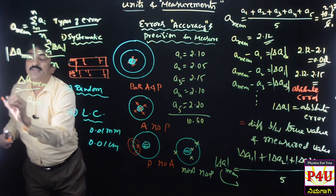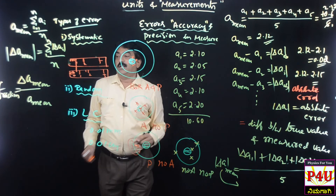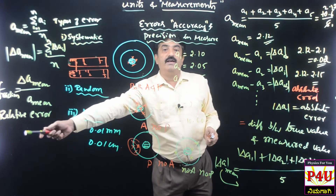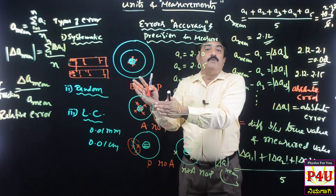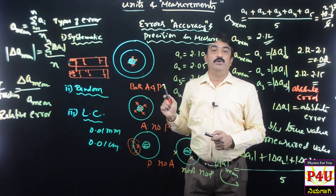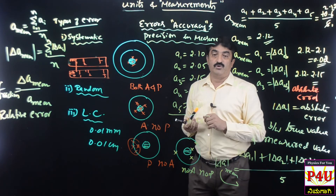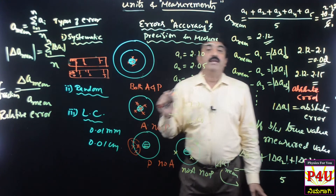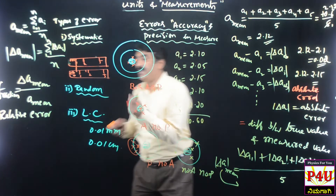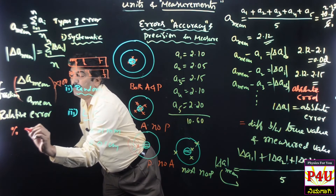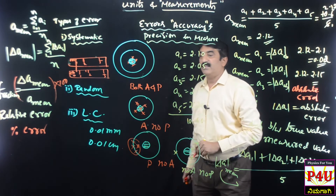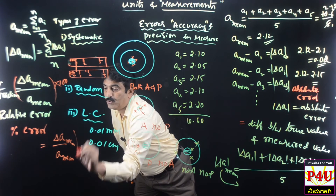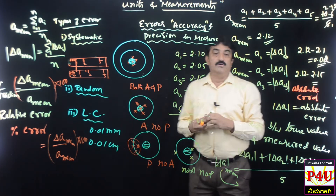The relative error, also called fractional error, is the ratio of the mean absolute error to the mean value. Relative error is defined as ΔĀ / A̅. Multiplying this by 100 gives the percentage error.